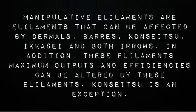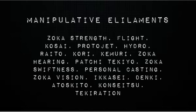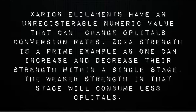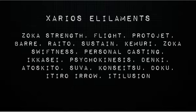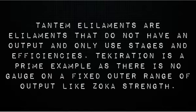Manipulative elements are: zoka strength, flight, kasai, proto-jet, hydro, ratio, kori, kimeri, zoka hearing, patchy, zoka swiftness, personal casting, zoka vision, ikase, denkai, atasakito, koncietsu, and decoration. Zaryos elements have an unregisterable numeric value that can change oplotal conversion rates; zoka strength is a prime example, as one can increase and decrease their strength within a single stage — the weaker strength in the stage will consume less oplotals. Zaryos elements include: zoka strength, flight, proto-jet, berry, ratio, sustain, kimeri, zoka swiftness, personal casting, ikase, psychokinesis, denkai, atasakito, suva, koncietsu, doku, itaro, iro, and illusion.